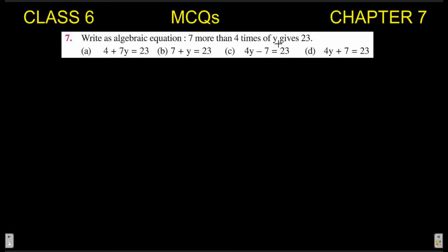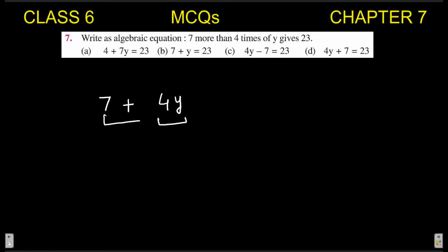Next MCQ: write an algebraic equation — 'seven more than four times of y gives 23.' 'Seven more than' means plus seven. 'Four times of y' is written as 4y (without multiplication sign). So seven more than four times of y is 7 + 4y, or equivalently 4y + 7. Both expressions are correct since the left-hand side can be written either way.